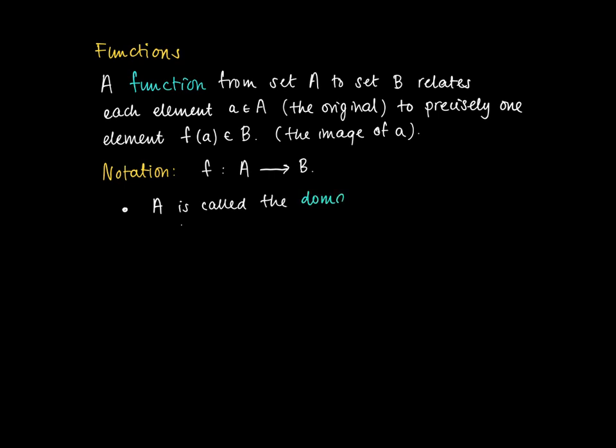Then A is special because it's called the domain of f. It contains all values that are assigned to some value in B. This is also denoted by dom(f) or D subscript f.